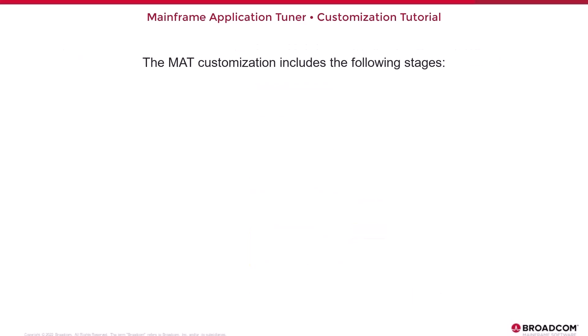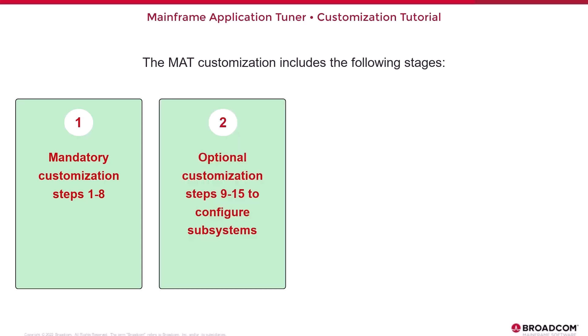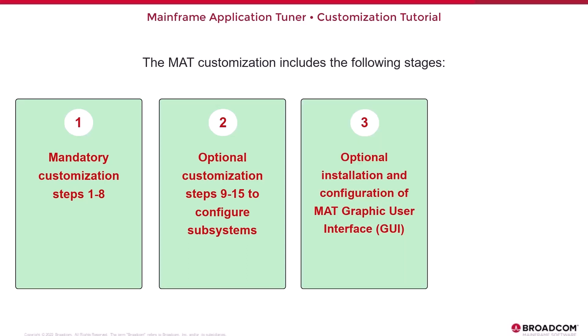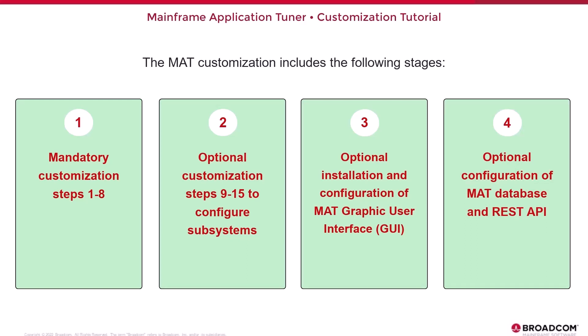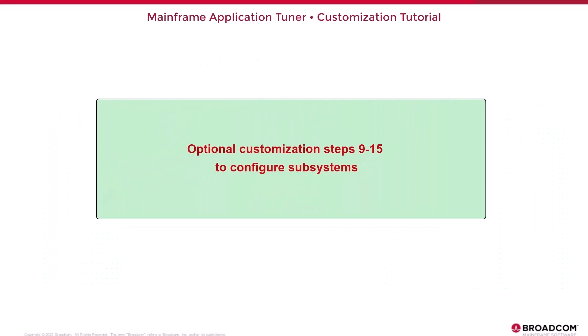The MAT Customization includes the following stages: 1. Mandatory Customization, Steps 1 through 8. 2. Optional Customization, Steps 9 through 15 to configure subsystems. 3. Optional Installation and Configuration of the MAT Graphic User Interface. And 4. Optional Configuration of the MAT Database and REST API. In this video, we'll focus on Optional Customization Steps 9 through 15 to configure subsystems.